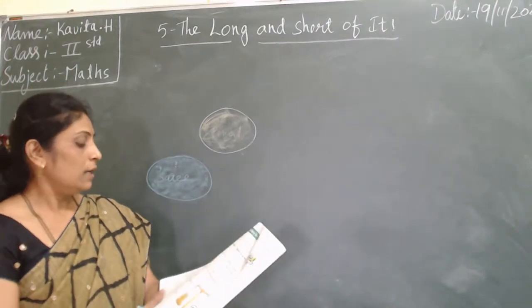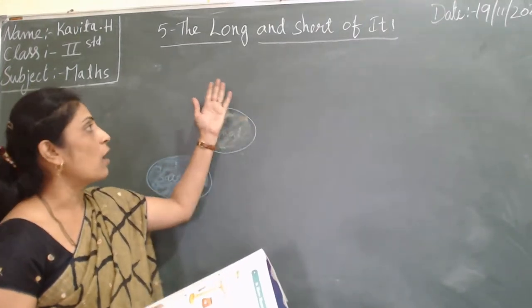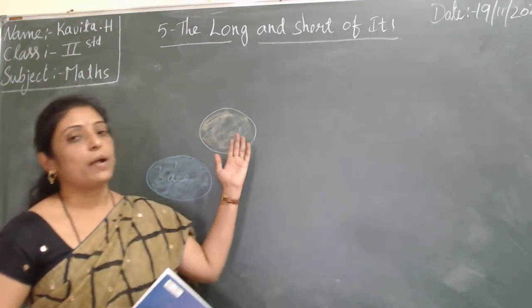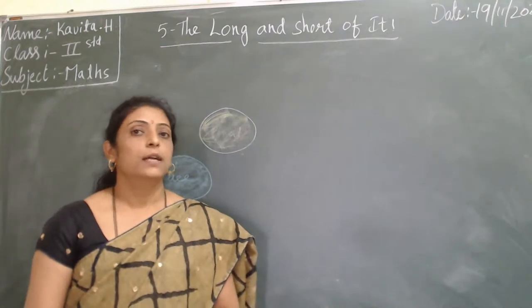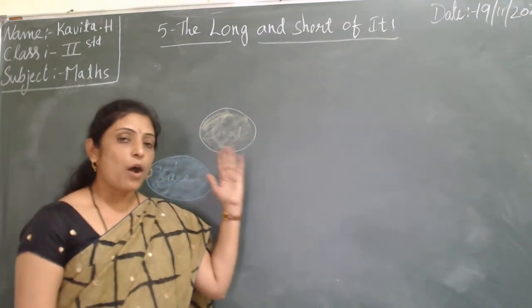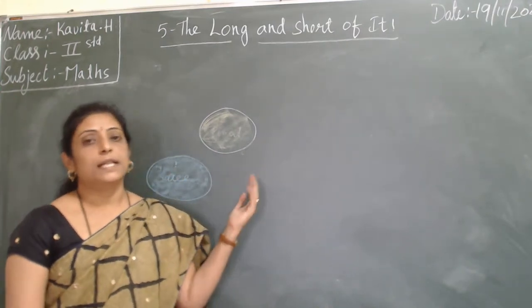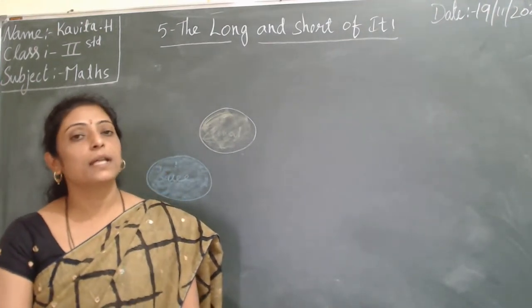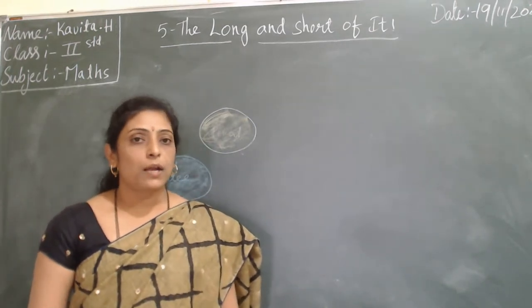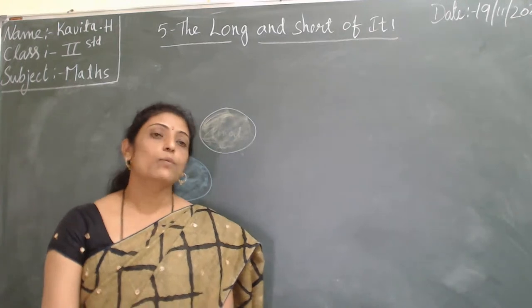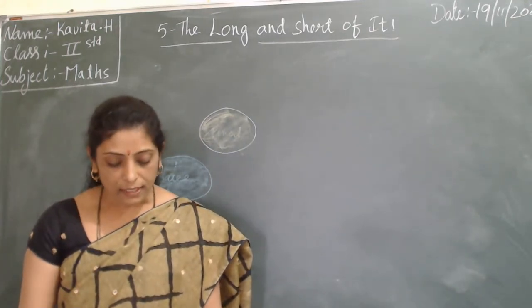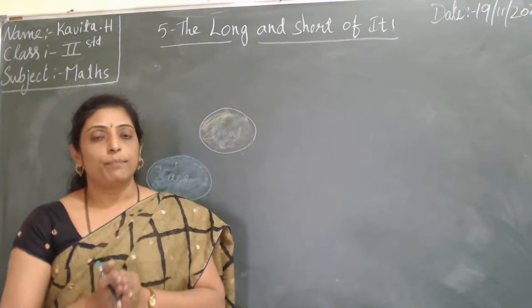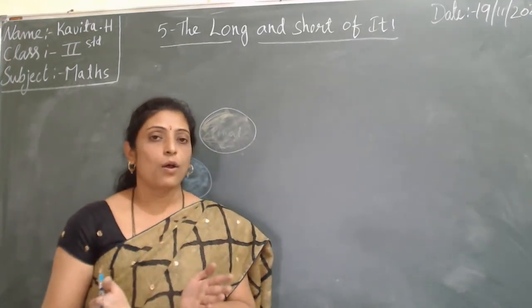We have come to the end of the lesson — The Long and Short of It. In this chapter, we have learnt long and short, measurement of objects, and fixed measures — that is meters and centimeters. Centimeter in short we write as cm; meter we write as m. Longer objects are measured in meters and smaller objects in centimeters.